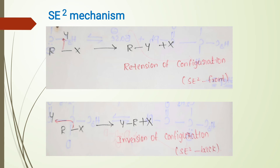In SE2 Mechanism, bond breaking and making occur simultaneously. The attacking species are electron-deficient centers, which bring a vacant orbital to the substrate. So the electrophile can attack the carbon from either the front side or the back side, because the reagent is an electron-deficient center. If the reagent comes from the front side, it is called SE2 front mechanism. And if the electrophile comes from the back side, it is called SE2 back mechanism.